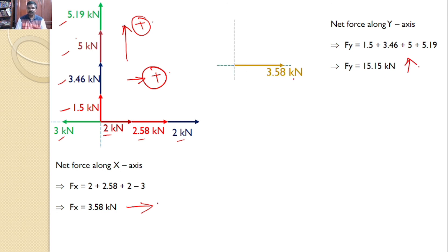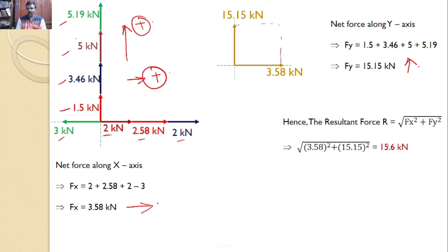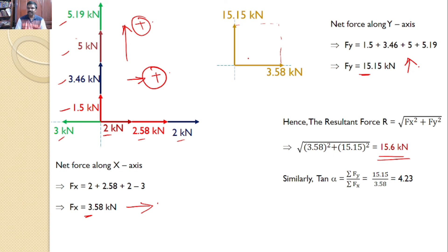The net force along the x-axis is 3.58 kilonewtons and the net force along the y-axis is 15.15 kilonewtons. The resultant force is calculated as the square root of Fx² + Fy², giving 15.6 kilonewtons. The angle made by the resultant with the x-axis is arctan(ΣFy / ΣFx), and since both components are positive the resultant is in the first quadrant at an angle of 76.7 degrees.